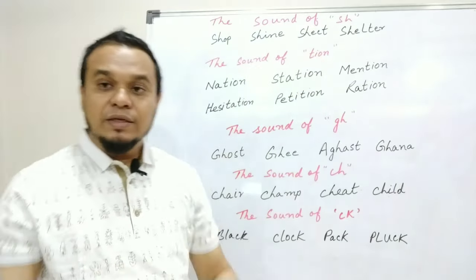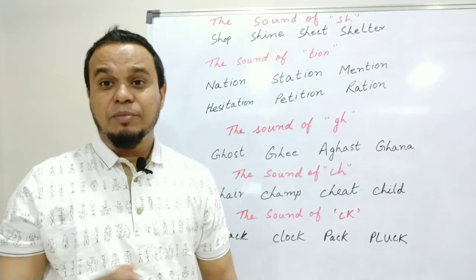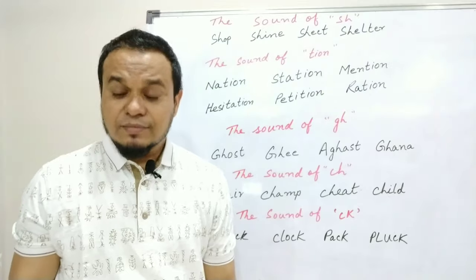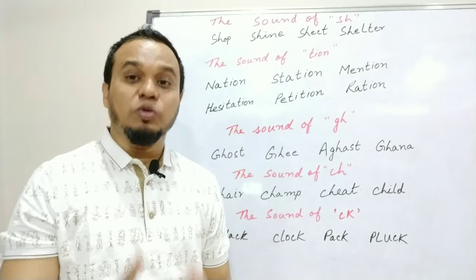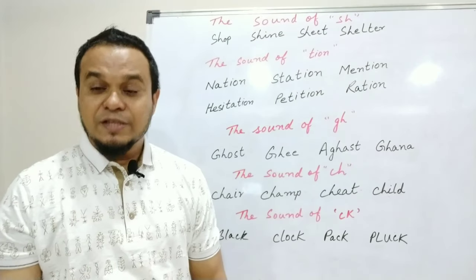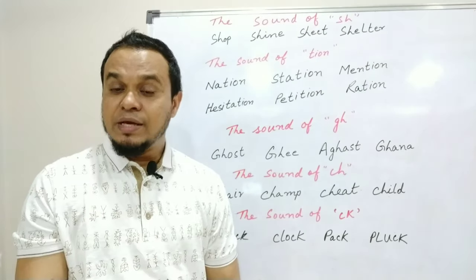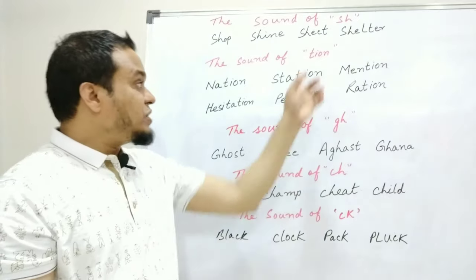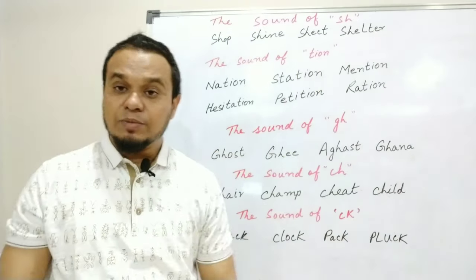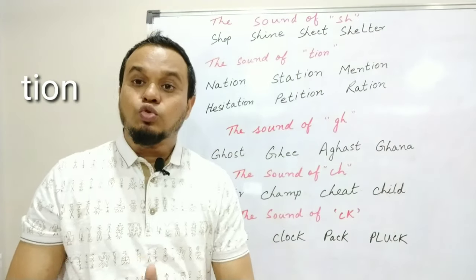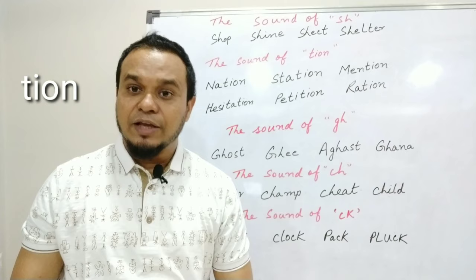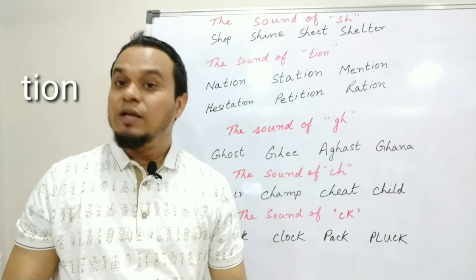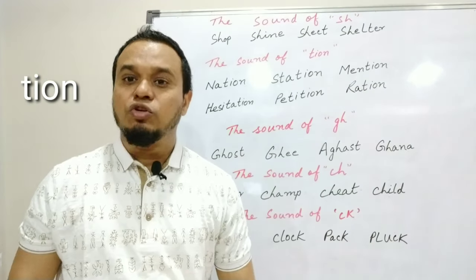The second rule is T-I-O-N. Sometimes people read NATION as 'Nation' with a hard T sound because they don't know what sound T-I-O-N makes. So when TION is written, it is called 'shun' — not 'sun'. Reading it as 'National' is absolutely wrong.